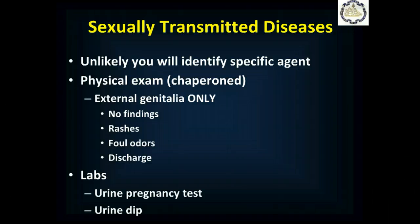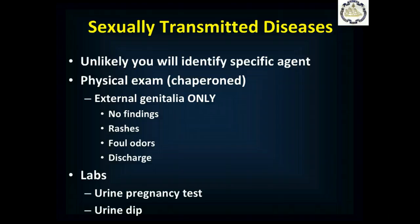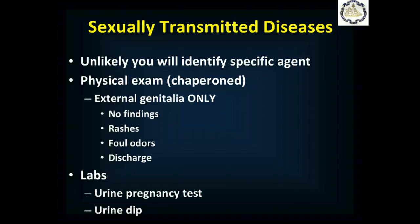If you describe a thin grayish discharge as opposed to a thick white cottage cheese-like discharge from the vagina, that means very different things to medical control and helps them decide what antibiotic or antifungal to use. Laboratory studies include urine pregnancy tests in women of childbearing years who have a uterus and ovaries, and a urine dipstick to look for urinary tract infection, particularly if they're complaining of burning when they urinate.